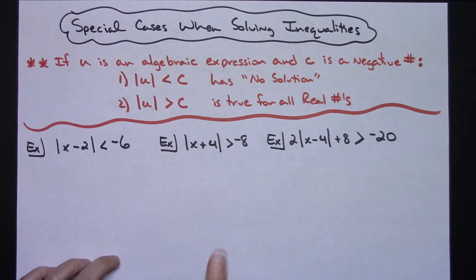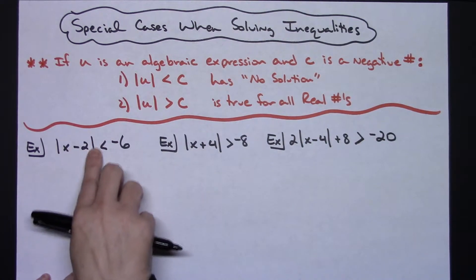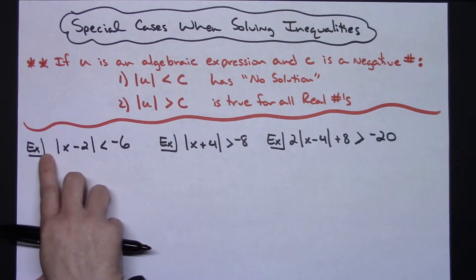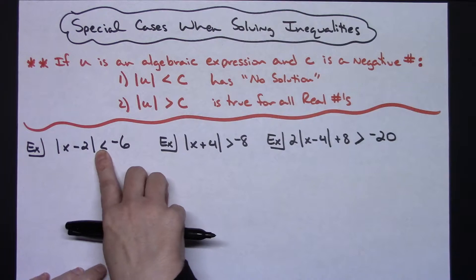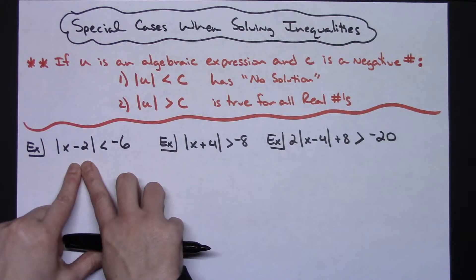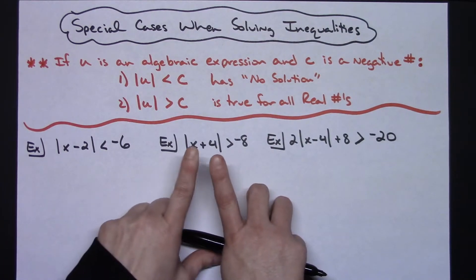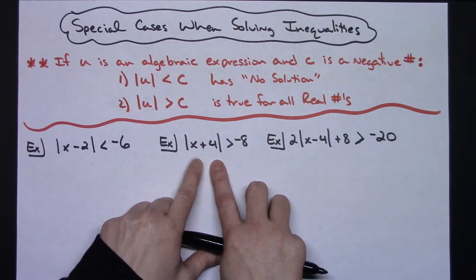Now this rule does state that the absolute value bars must be isolated. I'm going to do three examples here and show you the difference of what I mean by isolated. In this first one, the absolute value bars are isolated because nothing is being multiplied or added or subtracted to the other side. So this is an example of absolute value bars being isolated. Same thing for this second one as well.